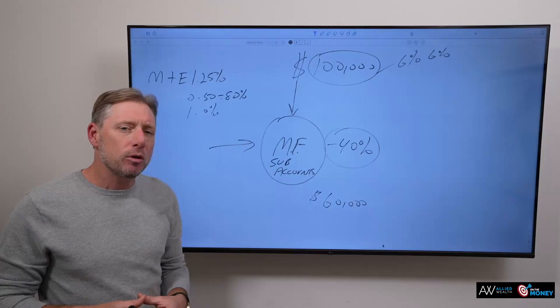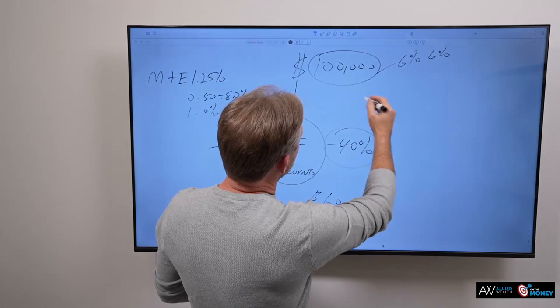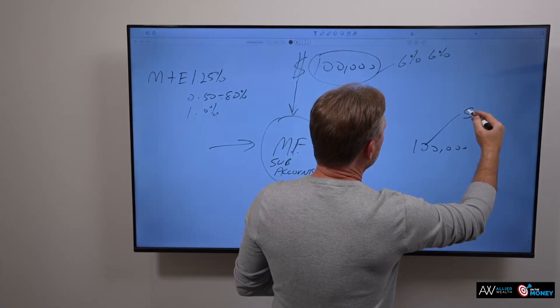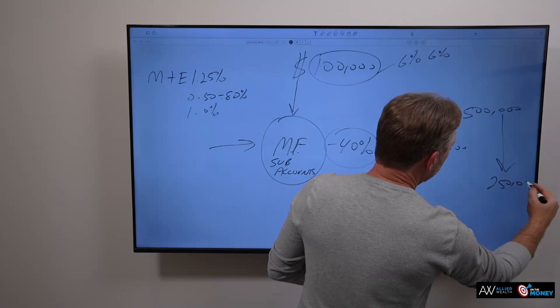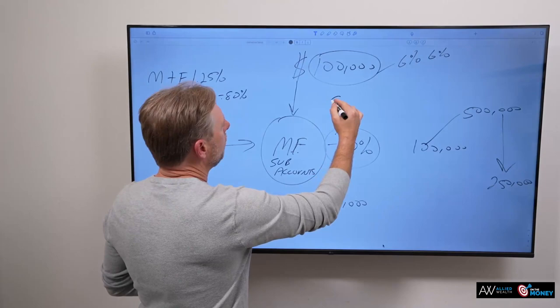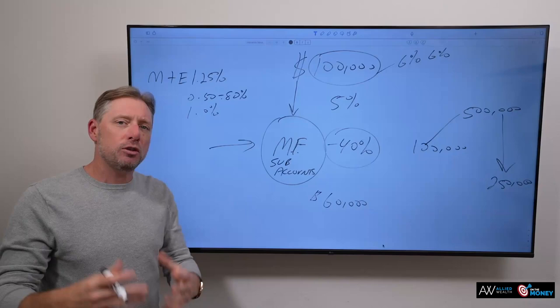Now, guaranteed minimum withdrawal benefit works like this. Wherever the highest value your contract reaches. So, let's say you start with $100,000. And then over a period of time, your contract reaches $500,000. And then plummets back down to, say, $250,000. Just arbitrary numbers here. Well, what this means is they give you a distribution rate of, say, 5%. Okay.